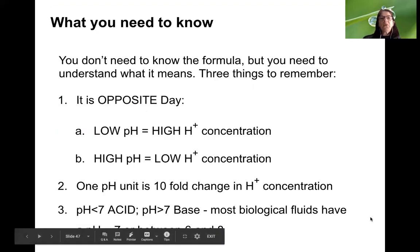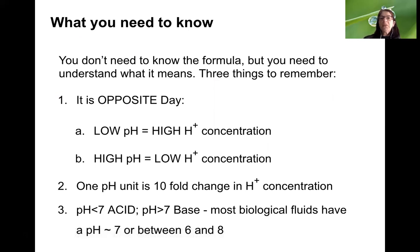There are three things to remember. One: it's opposite day — low pH means high hydrogen ion concentration, high pH means low hydrogen ion concentration. That is the most common mistake students make. Two: a single pH unit is a 10-fold change in hydrogen ion concentration because it's a logarithmic scale. Three: if pH is less than 7, you're an acid; if more than 7, you're a base. Most biological fluids have a pH around 7, anywhere between 6 and 8.